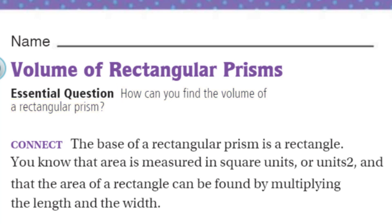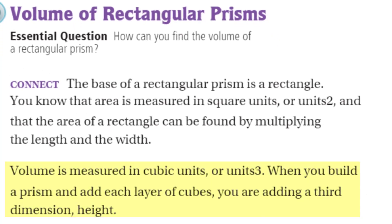It's just like the topic — almost the same thing. So we're going to learn how to do that today. But first we have to look at our connect. Since the base of a rectangular prism is a rectangle, you know that area is measured in square units or units squared, and that the area of a rectangle can be found by multiplying the length and the width. However, volume is measured in cubic units or units cubed.